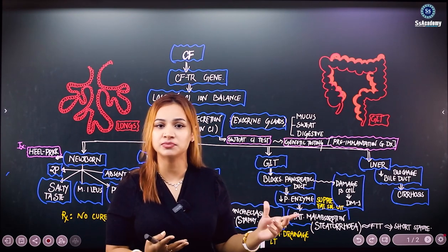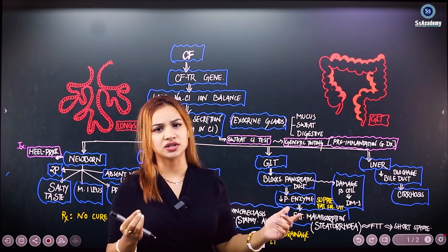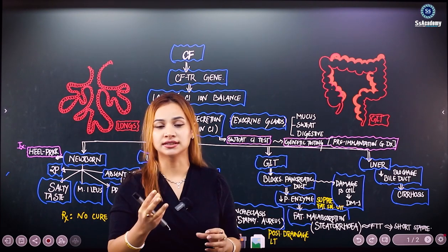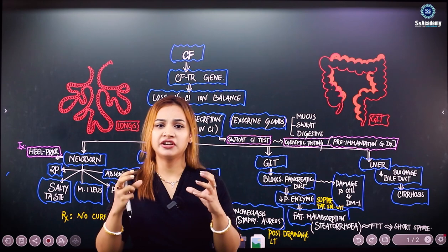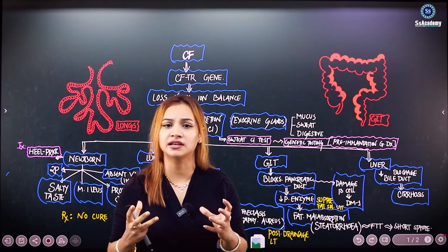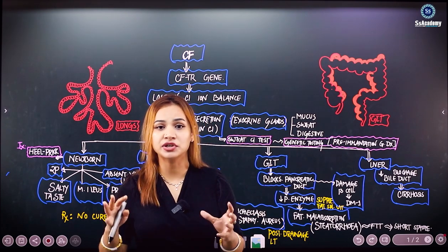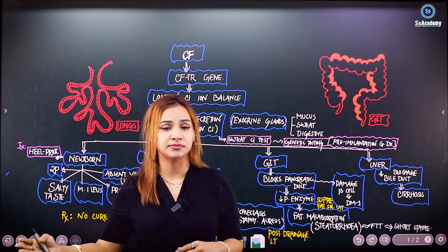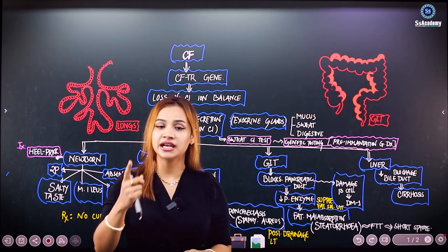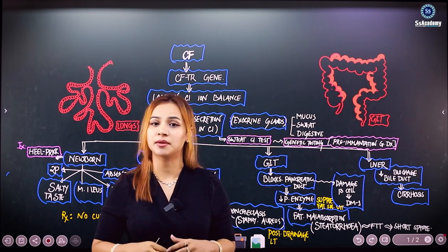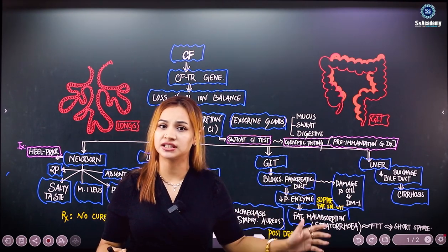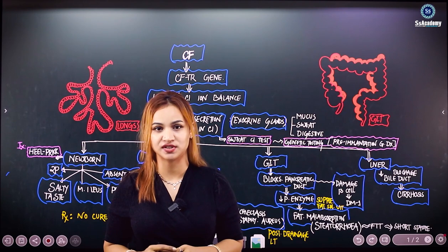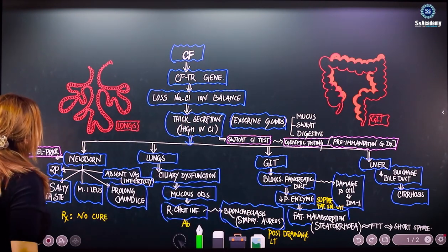If chloride is excessively secreted in the exocrine secretions — in the sweat, mucus, and digestive tract — in the respiratory tract you get thicker secretion rich in chloride. This blocks the alveoli, producing very thick mucus that is very difficult for the cilia to excrete from the lung, giving rise to recurrent chest infections and ultimately bronchiectasis. In the GI tract, thick secretion blocks the pancreatic duct, leading to fat malabsorption.